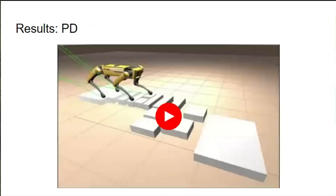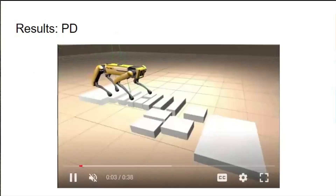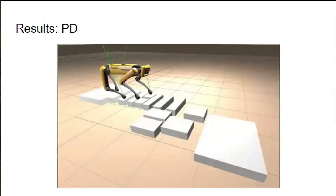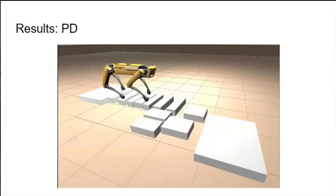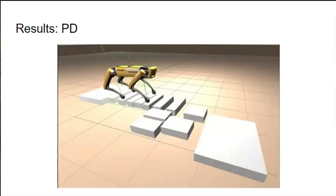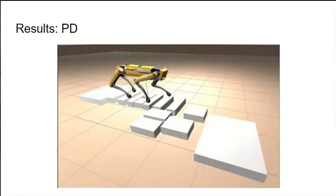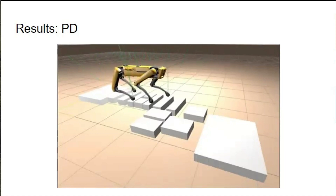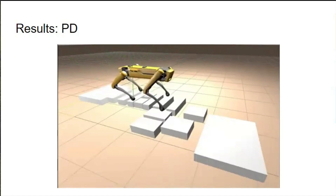Finally, what happens when we pass the desired trajectory to the low-level PD controller while simulating physics? You can see that Spot is able to track the trajectories, but it is not extremely stable. One issue is likely the teleporting start and end configurations, as mentioned before. Another issue is possibly that we are not constraining the center of mass to be within the support polygon during each step. So there is definitely room for improvement here.